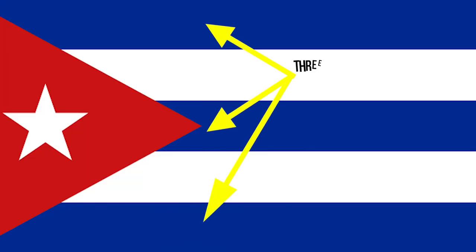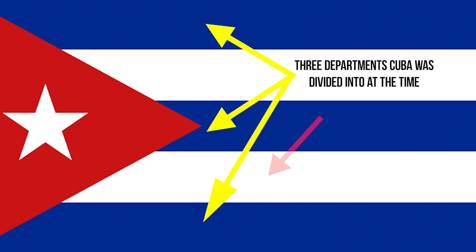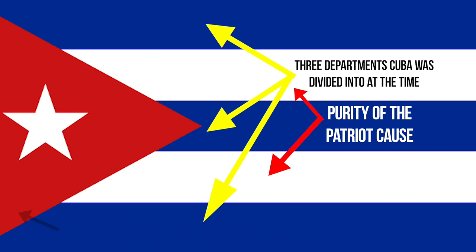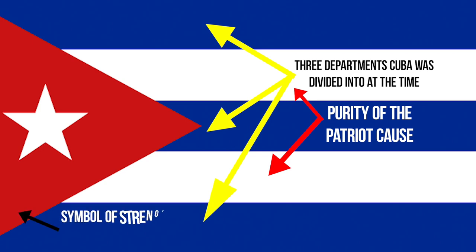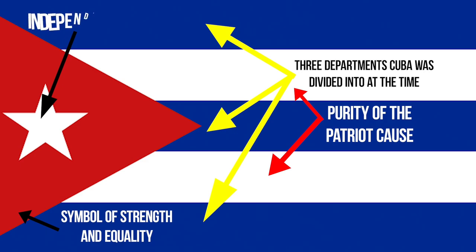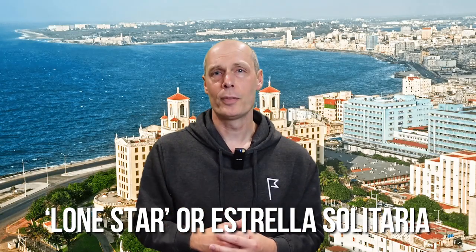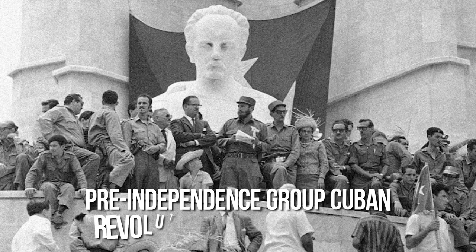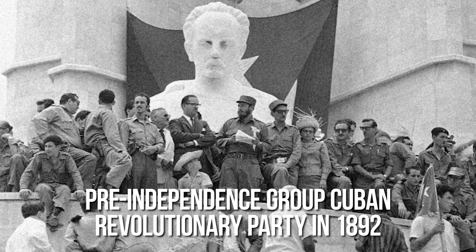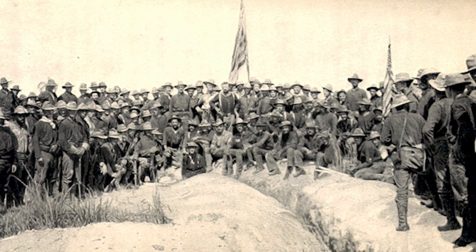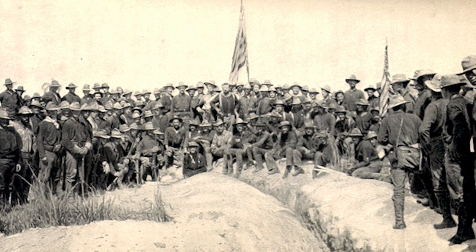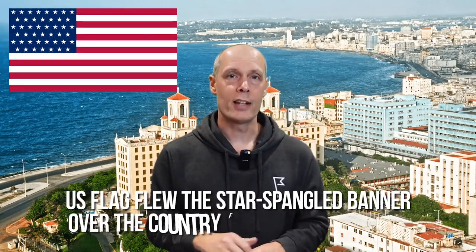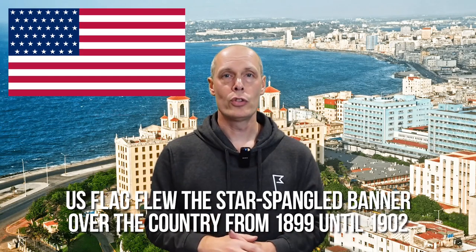The three blue stripes related to the three departments Cuba was divided into at the time, the white for purity of the patriot cause, the red triangle is a symbol of strength and equality, and a lone star of independence. Hence the name of the flag is Lone Star, or Estrella Solitaria in Spanish. The flag was adopted by the pre-independence group Cuban Revolutionary Party in 1892, and when the United States took control of Cuba from Spain as part of the Spanish-American War, the US flew the Star-Spangled Banner over the country from 1899 until 1902, when the US granted independence and this flag was flown officially as their national flag for the first time.